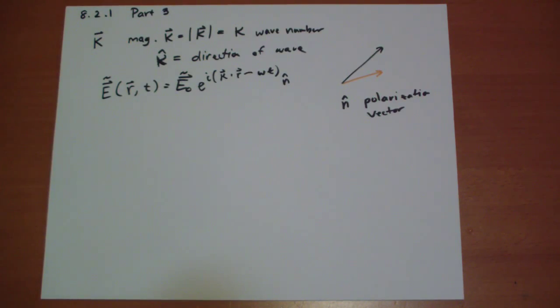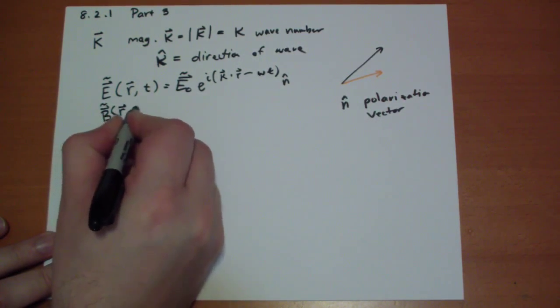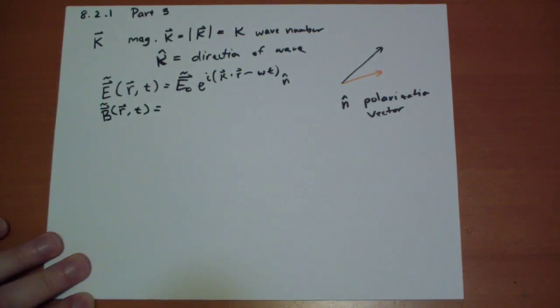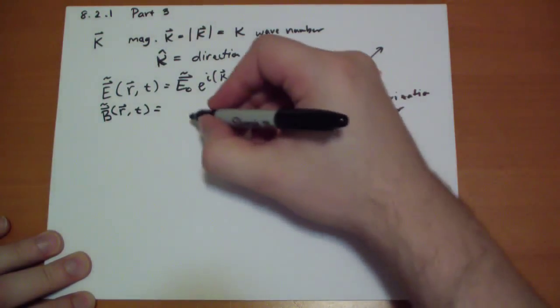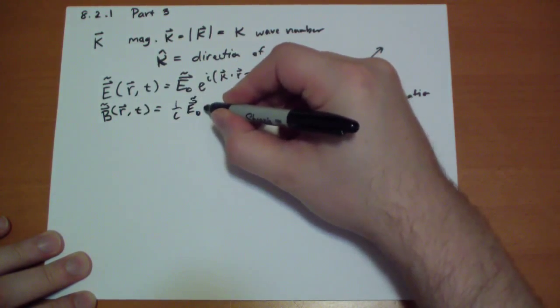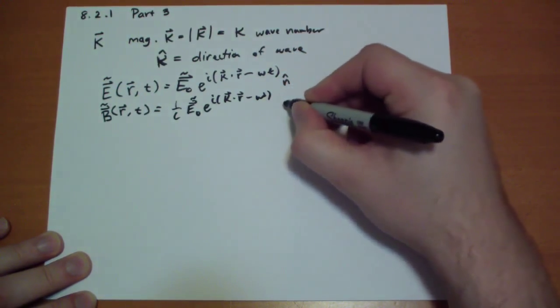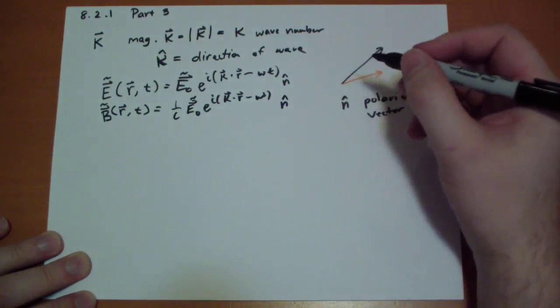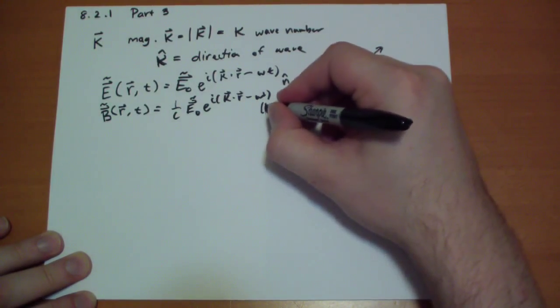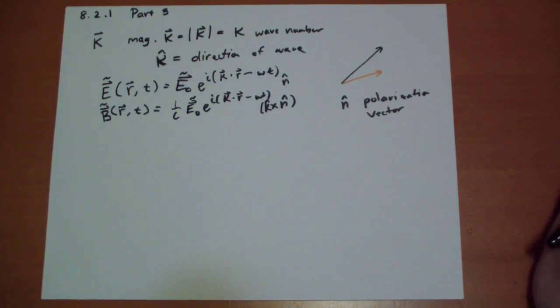So n-hat is the polarization vector. And our B vector is already described thanks to Maxwell's laws. And rather than use B-naught, we're going to just use 1 over C, E-naught, and then use the same e to the i, kappa vector dot R vector minus omega t, kappa-hat cross n-hat, because the B field points perpendicular to the E field.